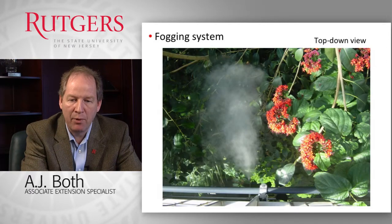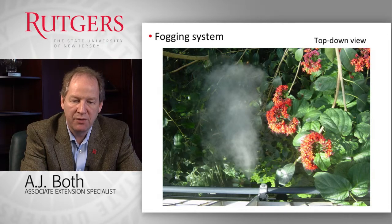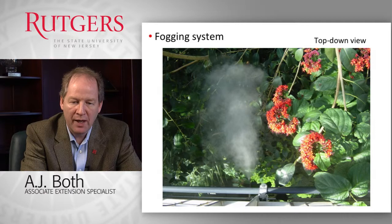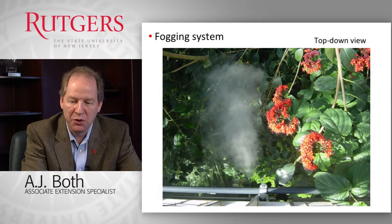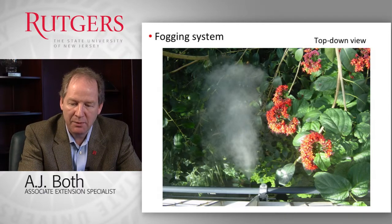Here's an example of a fog nozzle generating a very fine mist with very small droplet sizes. It's a top-down view, and it can be difficult to photograph a misting system facing upward because light typically obscures the vision of the very fine mist being produced by the nozzles.